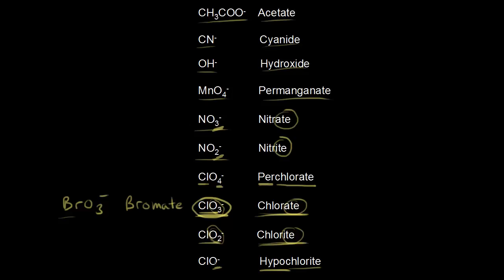And we could do another example. So instead of ClO minus, which is hypochlorite, we could have had BrO minus, which would therefore be hypobromite. So this would be hypobromite.